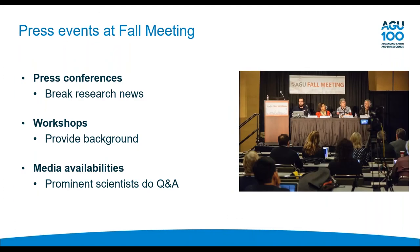We put together three types of press events. The majority are press conferences, where a small panel of scientists present new research results — the purpose is to break news. We also do a couple of workshops, which give reporters background on an upcoming mission or project coming up in the next six months to a year. We also do several media availabilities, where prominent scientists or agency heads are available for a question-and-answer session with reporters.